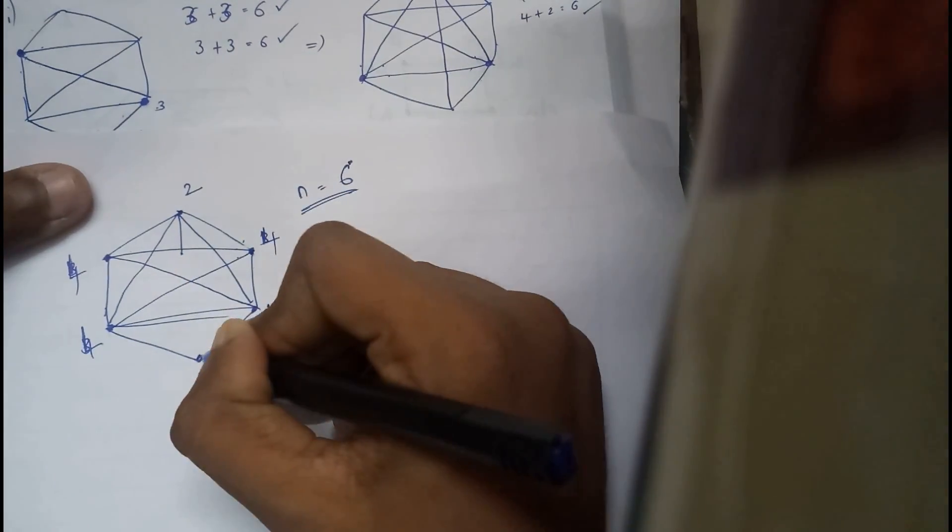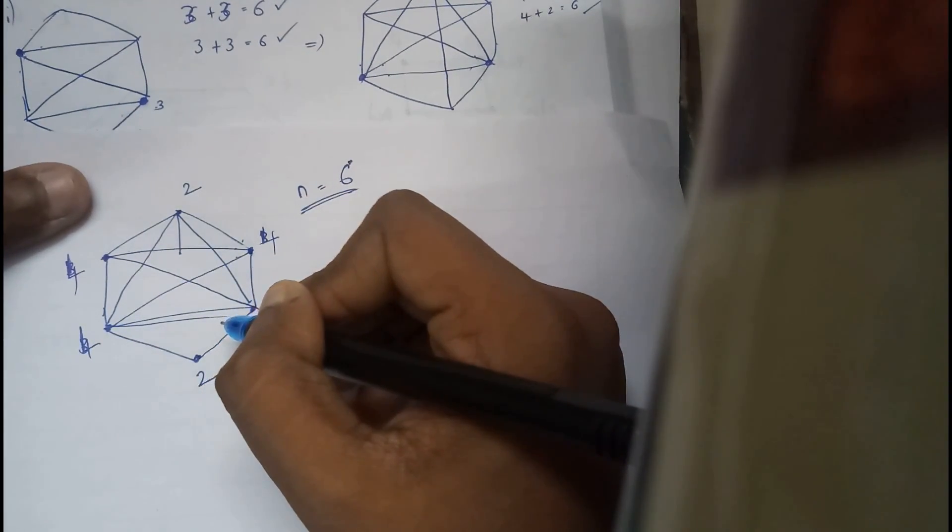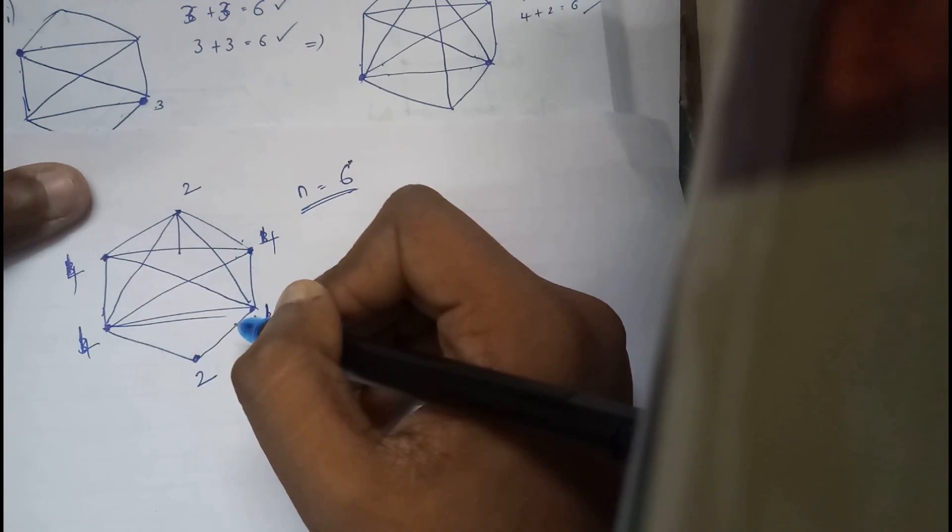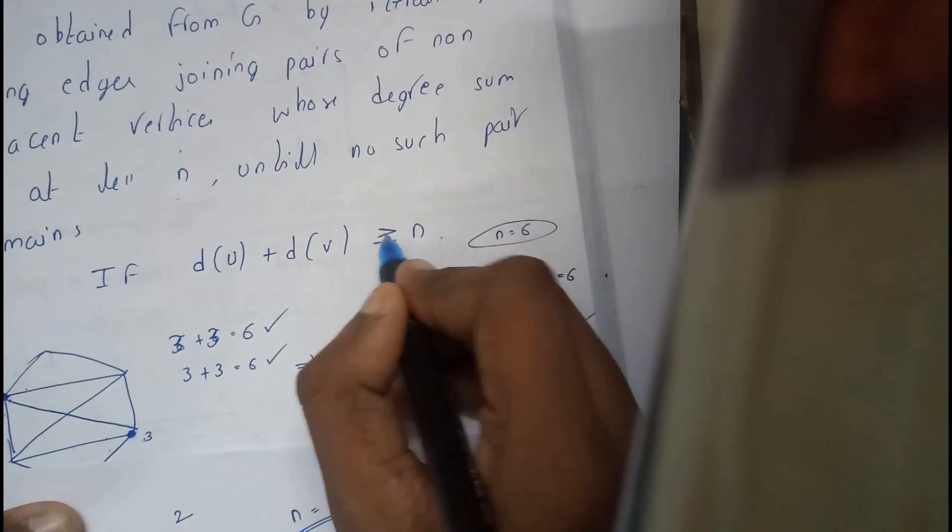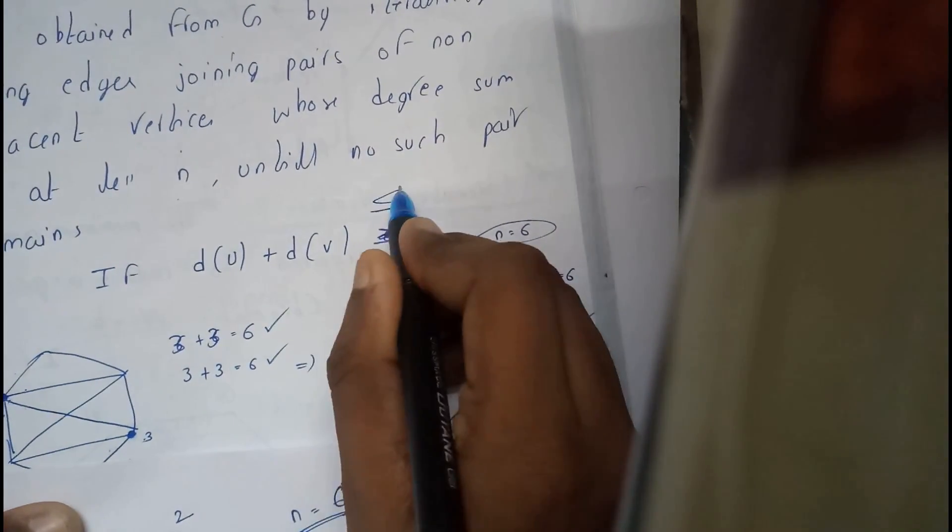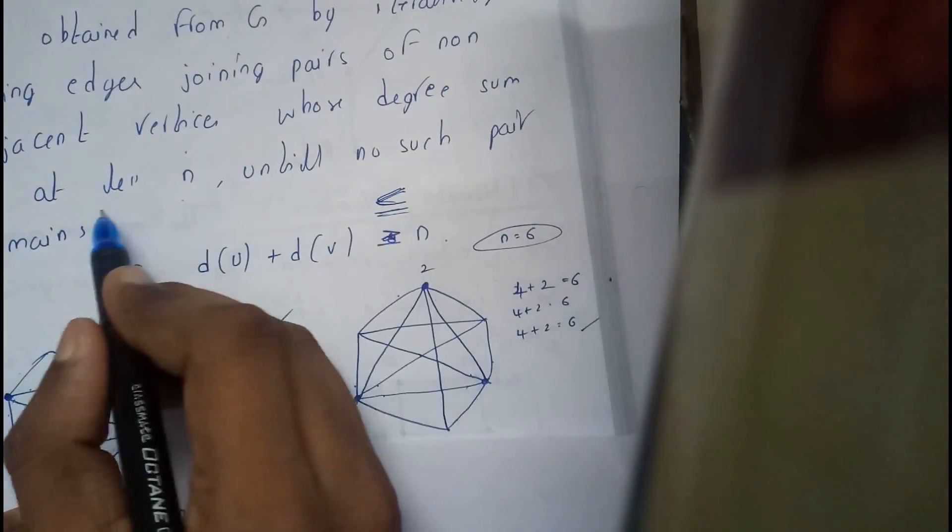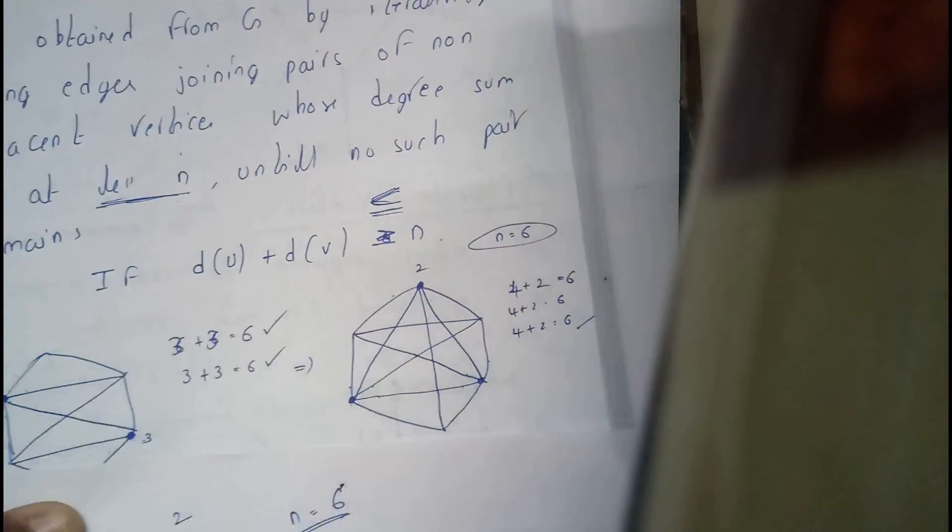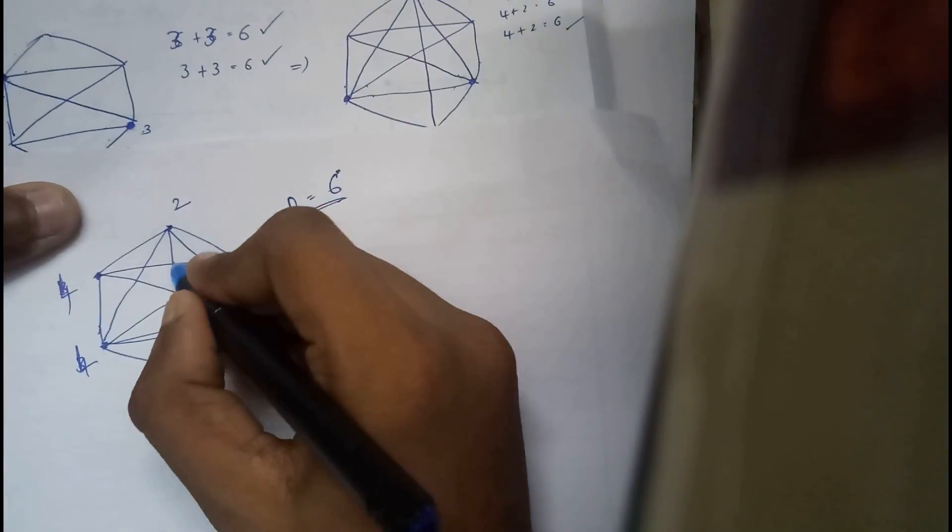So this is also two. It should be always less than. This is what I have just written a bit wrong. Less than, here I have wrote correct. Less than n. So that we can join these two even.